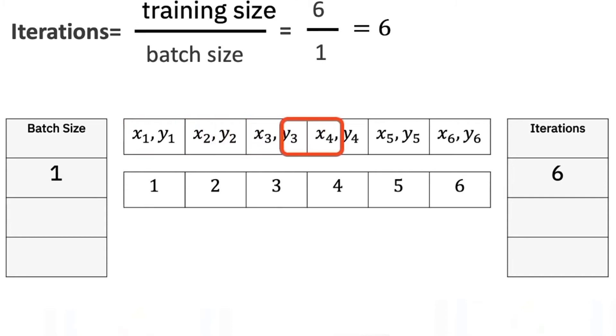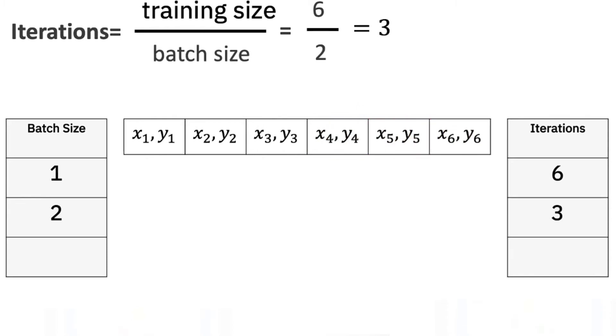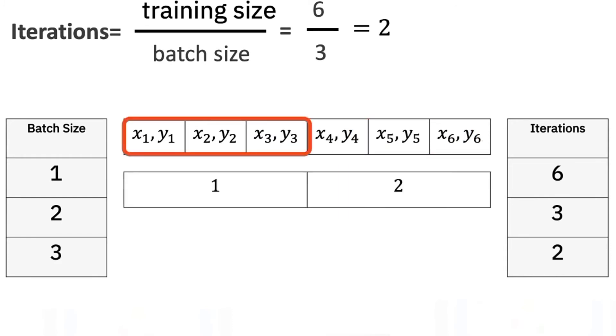We can verify this pictorially. We see for each iteration we use one sample. For a batch size of two it takes three iterations. We can verify this pictorially. Each iteration uses two samples. Finally for a batch size of three it takes two iterations. Again, we can verify this pictorially.